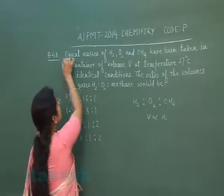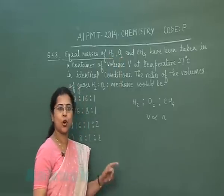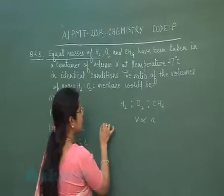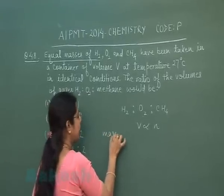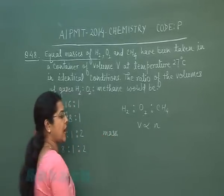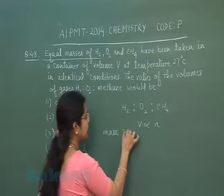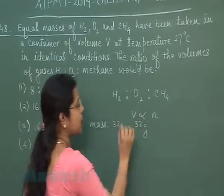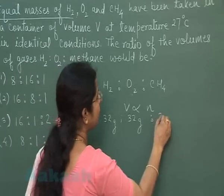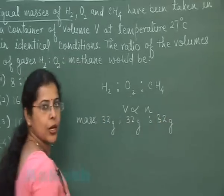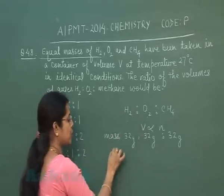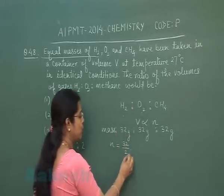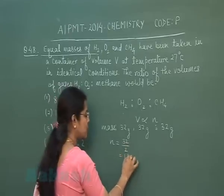In this question, it is mentioned that equal masses of all three gases are taken. Suppose the mass of gas taken is 32 grams for each gas: 32 grams hydrogen gas, 32 grams oxygen gas, and 32 grams methane gas. Now in the case of hydrogen, the number of moles will be 32÷2, which equals 16.